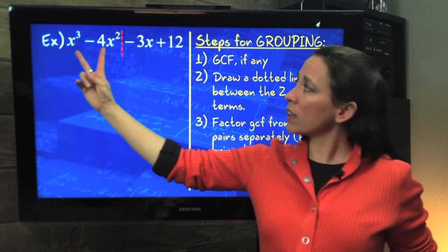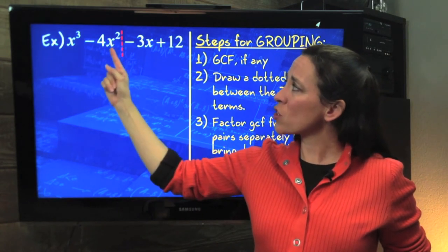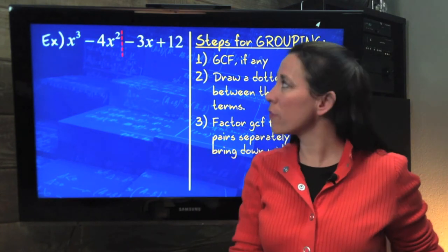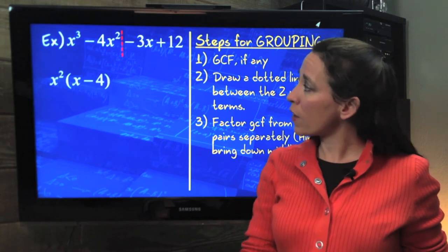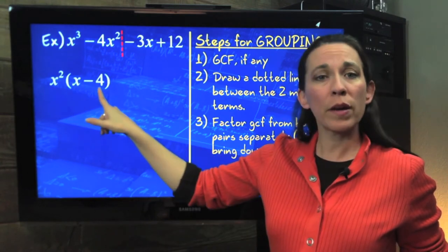So if we look to the left of our dotted line, we have an x³ here and an x², so it has a GCF of an x². And if you divide that out, we would be left with an x - 4.